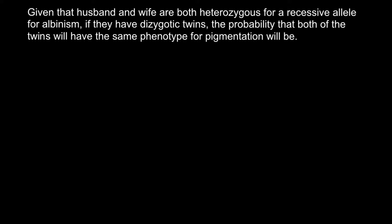According to our problem, both parents are heterozygous for this trait, so the genotype of the mother would be capital A and small a, and the genotype of the father would also be capital A small a. The dominant allele stands for the normal protein that results in normal pigmentation, and the recessive allele is the mutated allele.